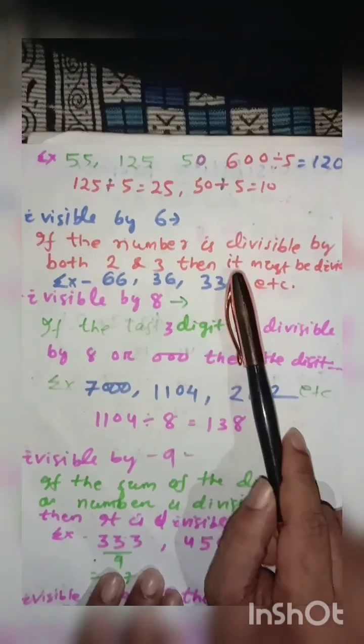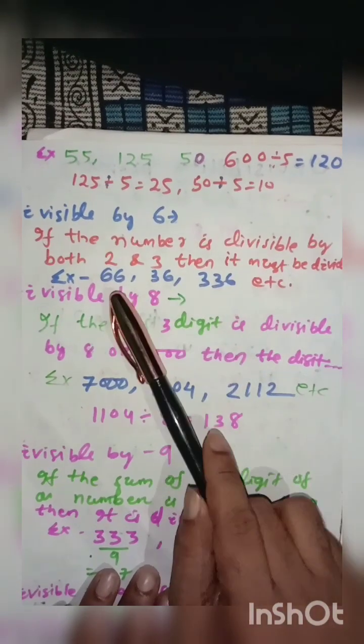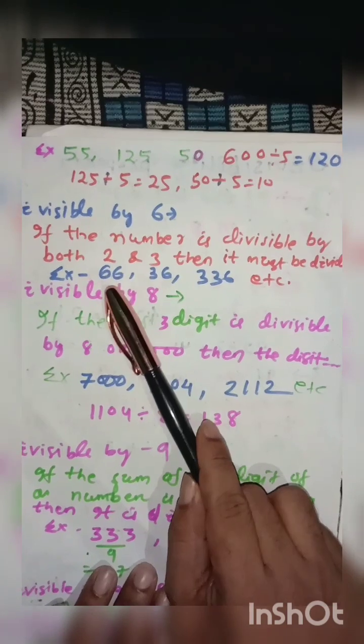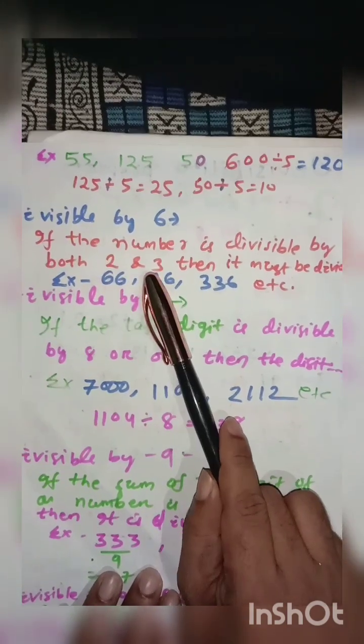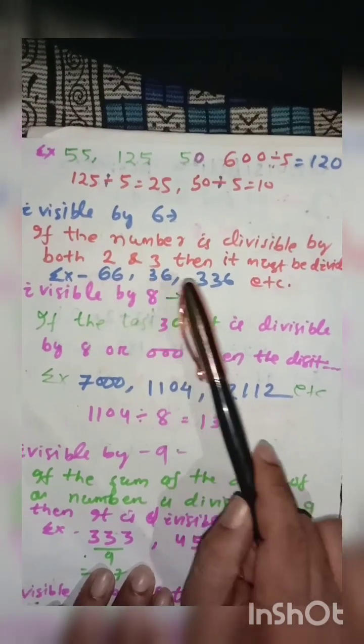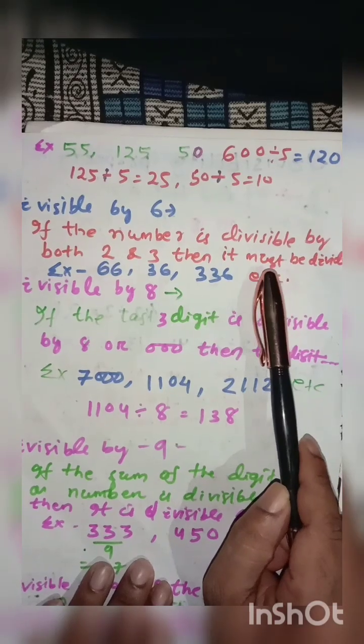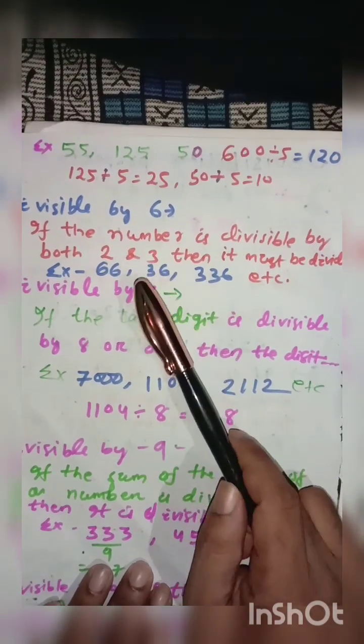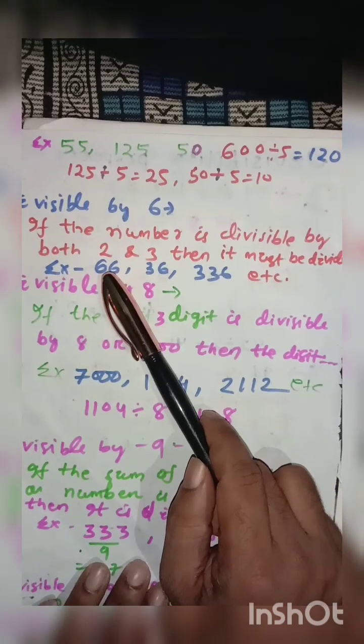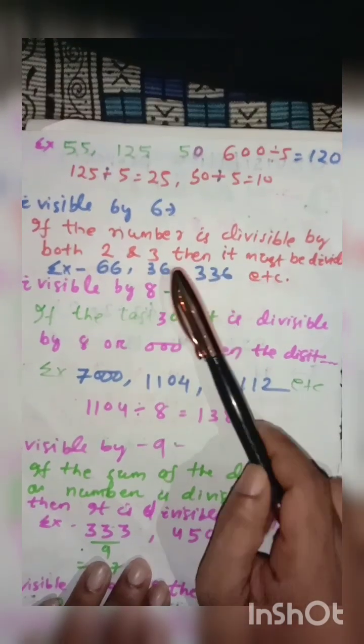Next, divisible by 6. This is an interesting property. If the number is divisible by both 2 and 3, then undoubtedly this number is also divided by 6. Examples: 66, 36, 336, etc. You can test in your copy whether these numbers are divisible by 6 or not.